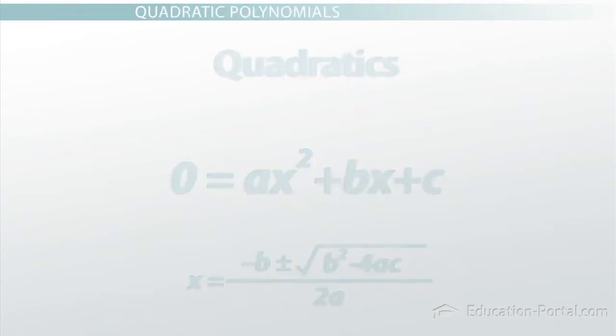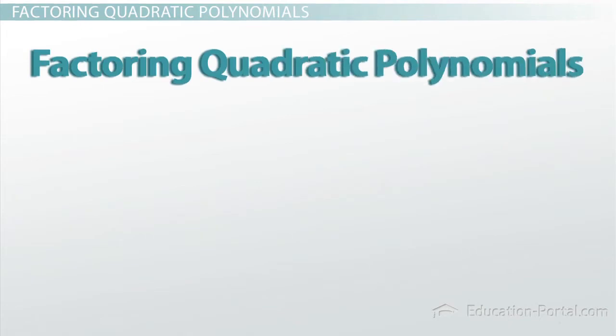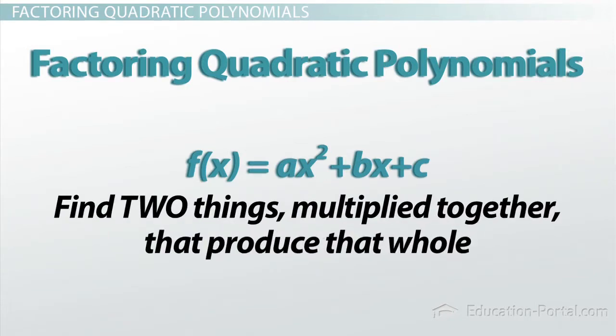The other really cool thing about quadratic polynomials is that we can factor them, usually pretty easily. So when we say we're going to factor them, we're going to take the whole, so the entire equation f of x equals ax squared plus bx plus c, and we're going to find two things that multiply together to make that whole.